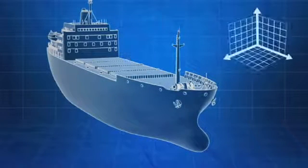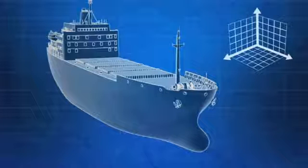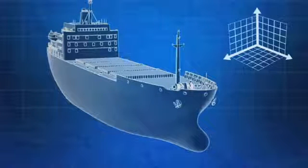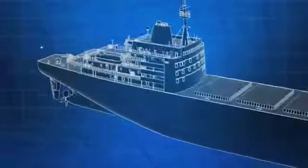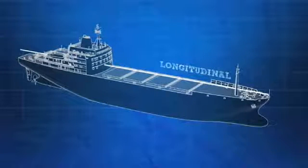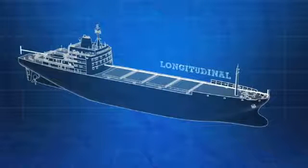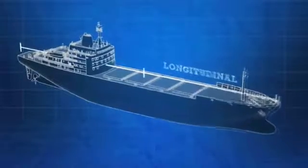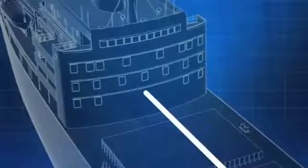Distances onboard ships are measured in one of three directions: longitudinally, transversely, and vertically. Longitudinal is the horizontal direction along the length of a ship. Longitudinal distances are measured from one of three places: the forward perpendicular, the aft perpendicular, or midships. Where longitudinal measurements are taken from will vary from ship to ship.